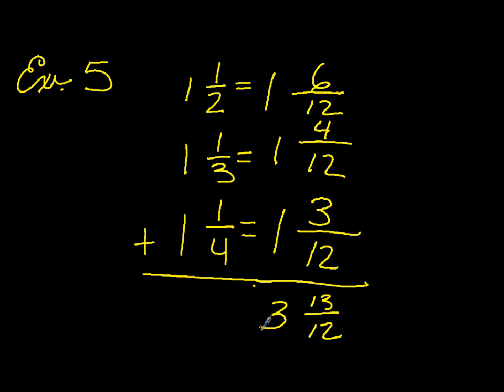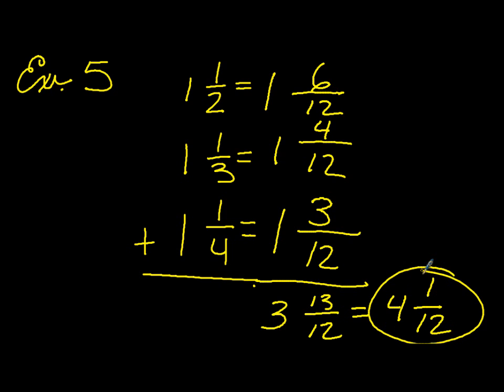We can see that the fraction part is improper. Twelve goes into thirteen one time, so our three becomes a four. The leftover is one. And we have four and one-twelfth.